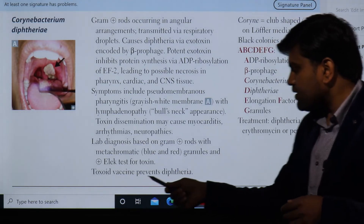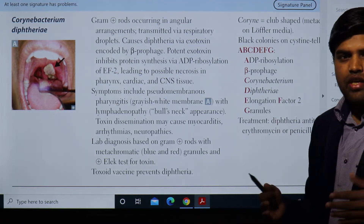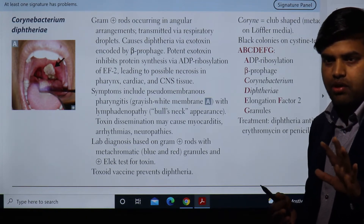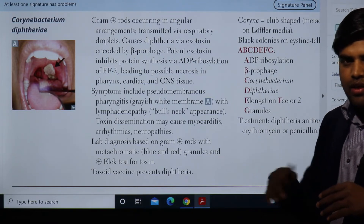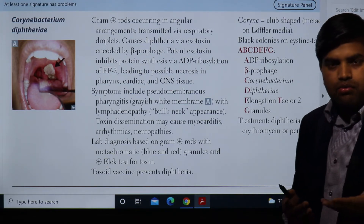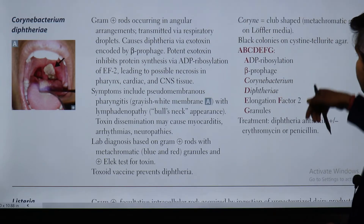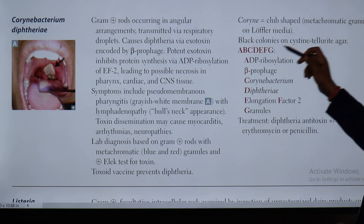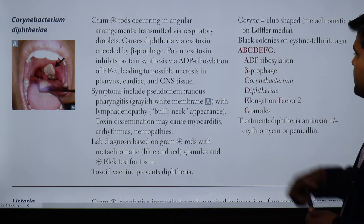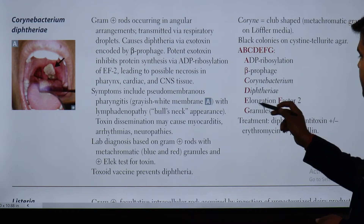Prevention is via a toxoid vaccine which prevents diphtheria. Vaccination is in the EPI schedule of Nepal and worldwide - three doses are commonly given, though the CDC recommends five doses. Over time, patient immunity wanes and antibody levels drop, which can lead to diphtheria infection. A mnemonic to remember: A for ADP ribosylation, B for beta-prophage, C for Corynebacterium diphtheriae, D for elongation factor 2, E for granules.